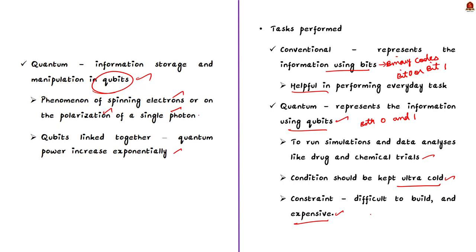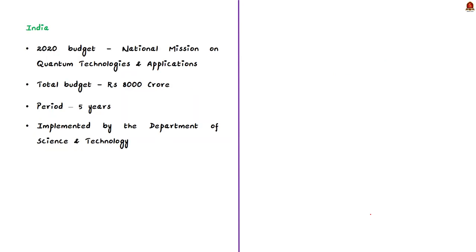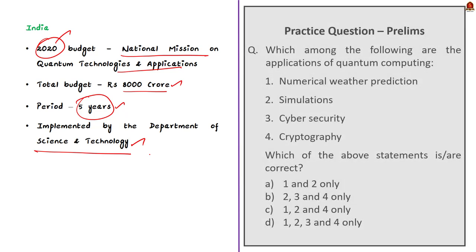So this is about some of the basics that you should know about the quantum mechanics and technology. It is believed that quantum technologies will play a major role in the future. And keeping this in mind, India has announced a national mission on quantum technologies and applications with a total budget outlay of Rs. 8,000 crore. It was announced in the 2020 budget for a period of 5 years.